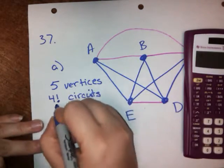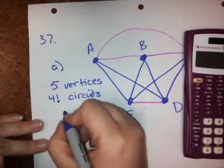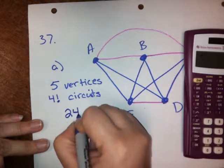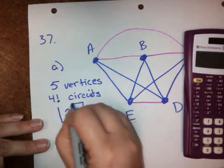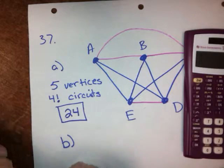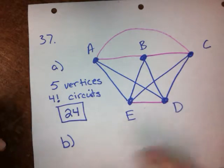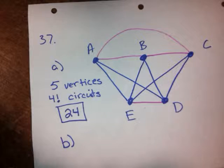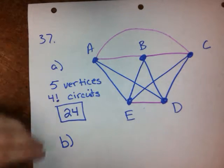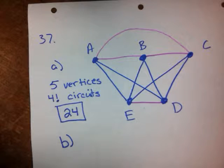So, five vertices means there are four factorial circuits. It means there are 24 Hamilton circuits in this graph that we drew. Okay, and now they're asking us to find, for part B, to find two Hamilton circuits in this graph that we've modified. So, let's go ahead and do it.